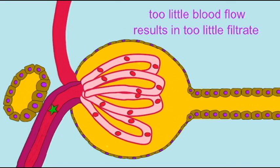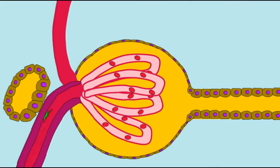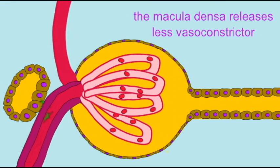The macula densa perceives this and in response will release less vasoconstrictor. When the macula densa releases less vasoconstrictor, this will result in vasodilation of the afferent arteriole.